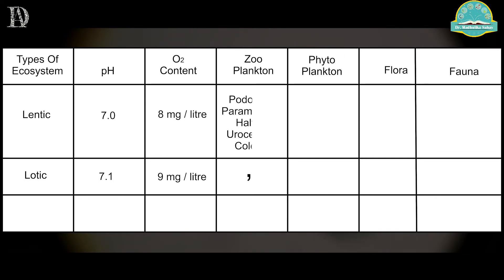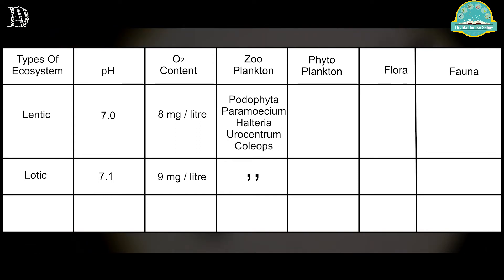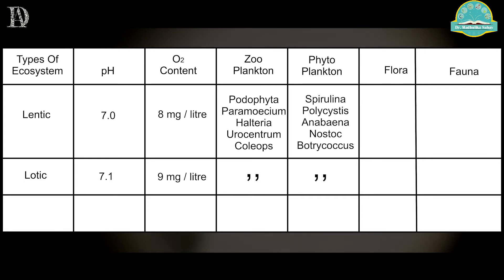In the Lentic ecosystem, the zooplanktons found were Oedophytes, Paramecium, Hatteria, Eurocentrum, and Coliops, whereas in the Lotic system, different zooplanktons were present.